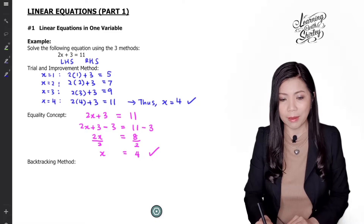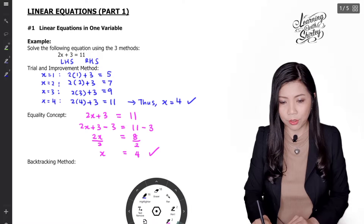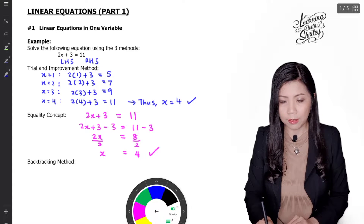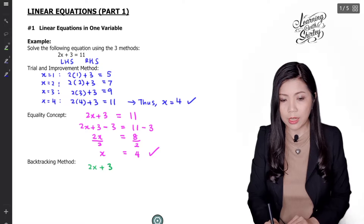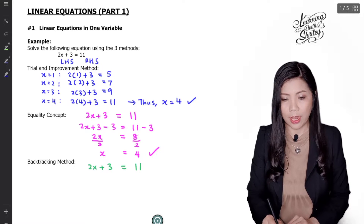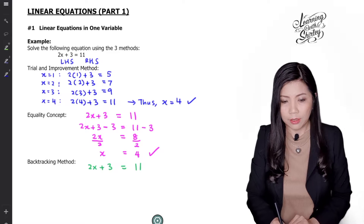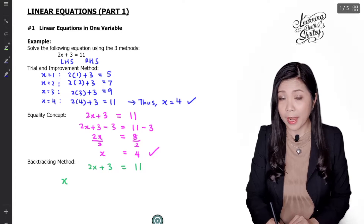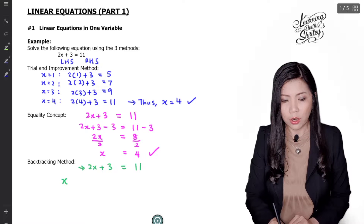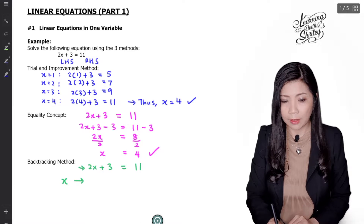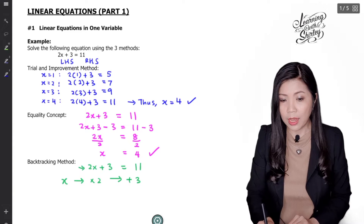The third method is the backtracking method. I'm going to use green. So for this equation 2x plus 3 equals to 11, x is first multiplied by 2 and then plus 3 is added to get 11.